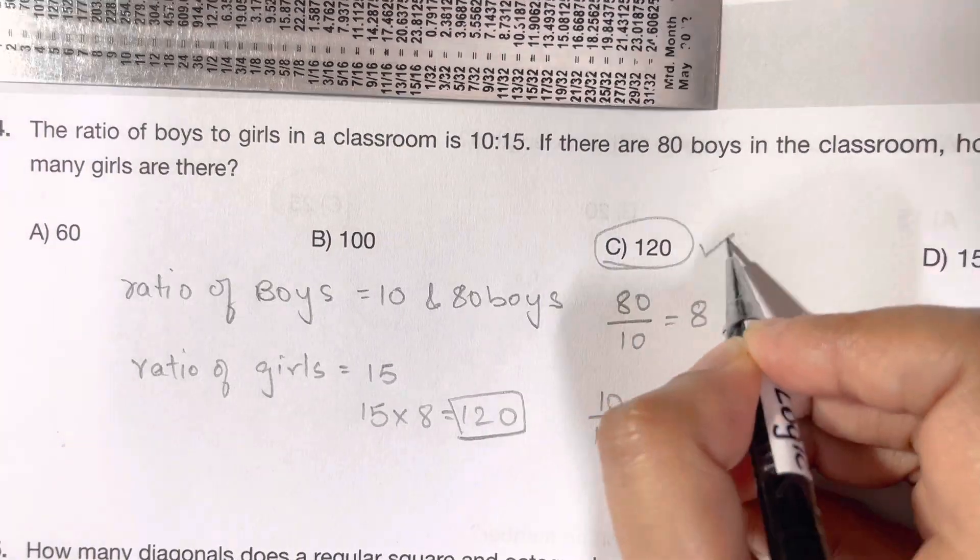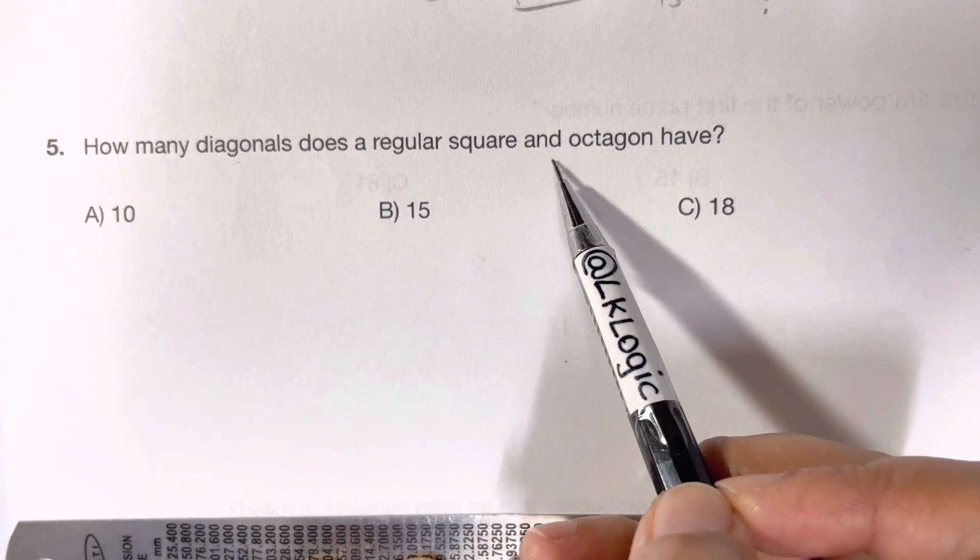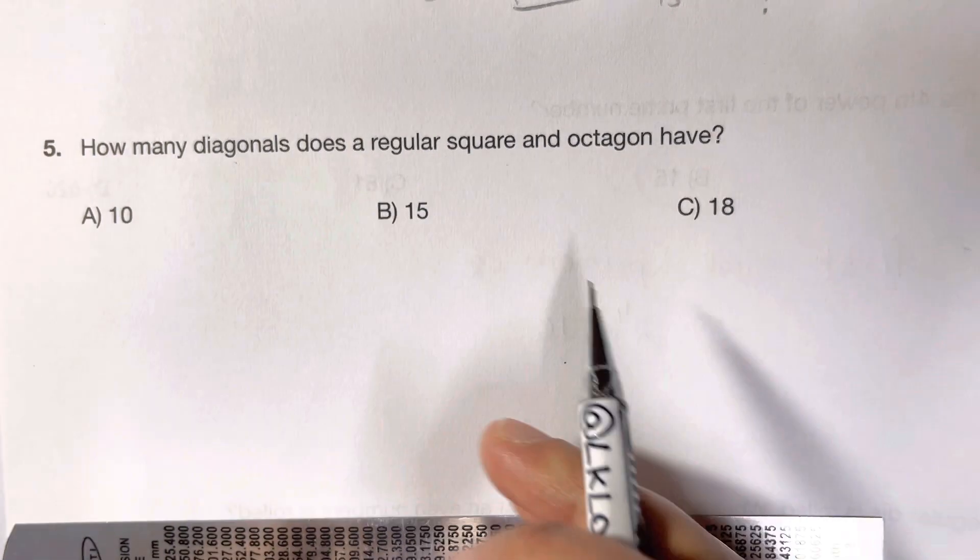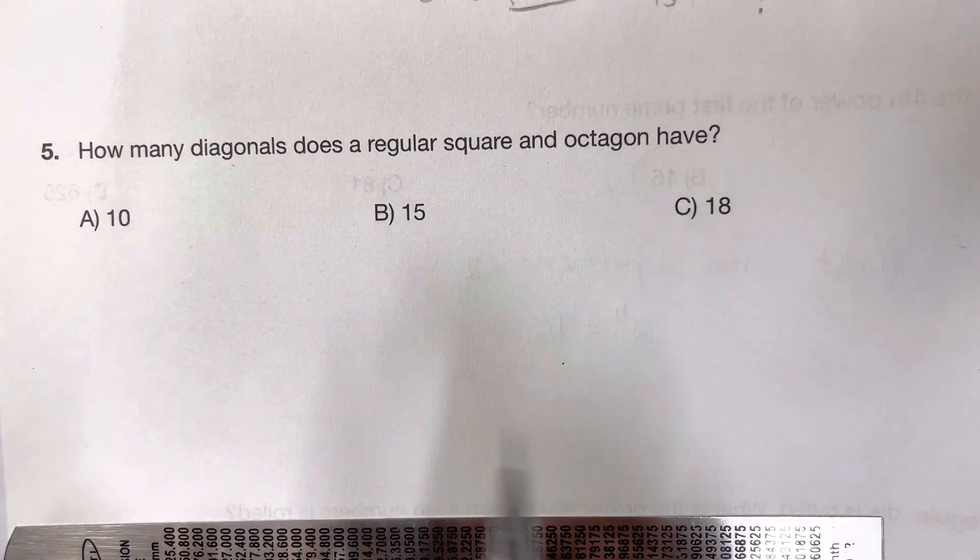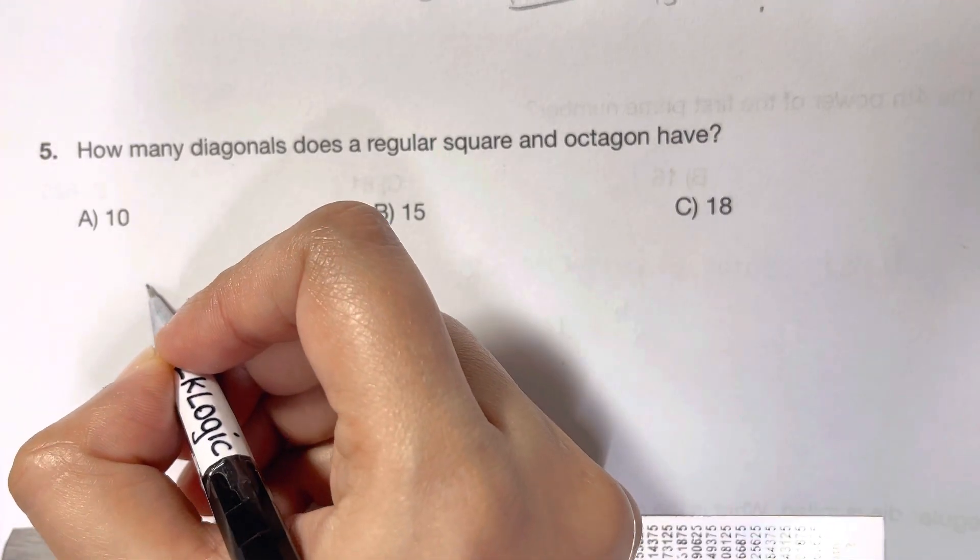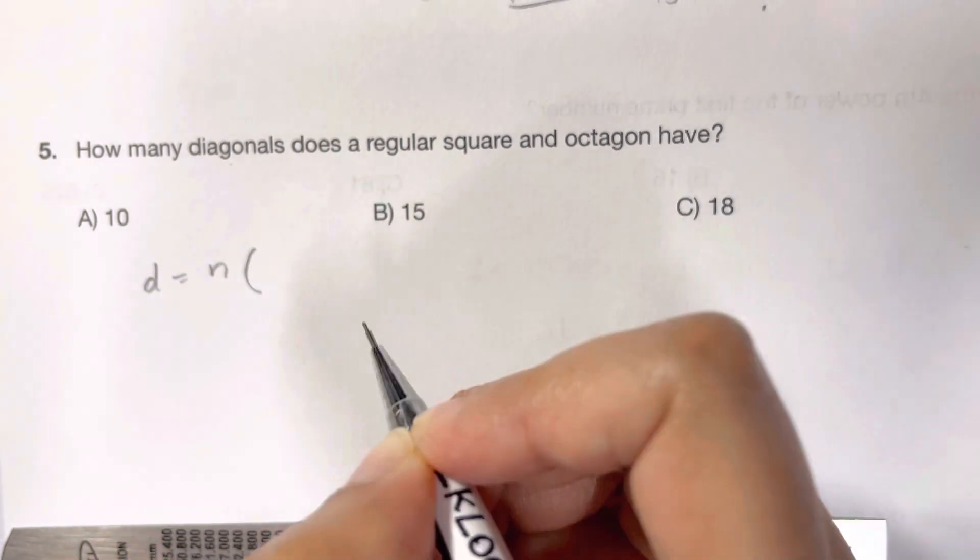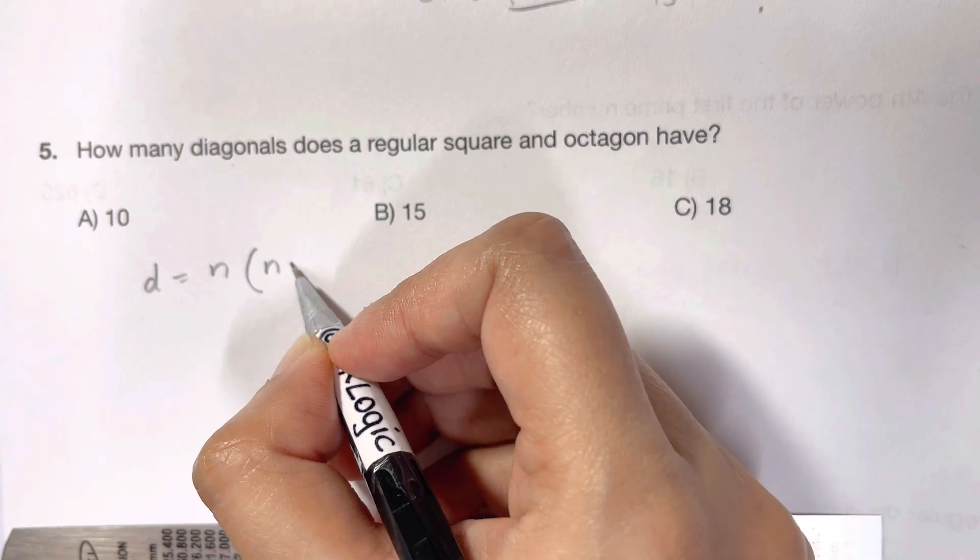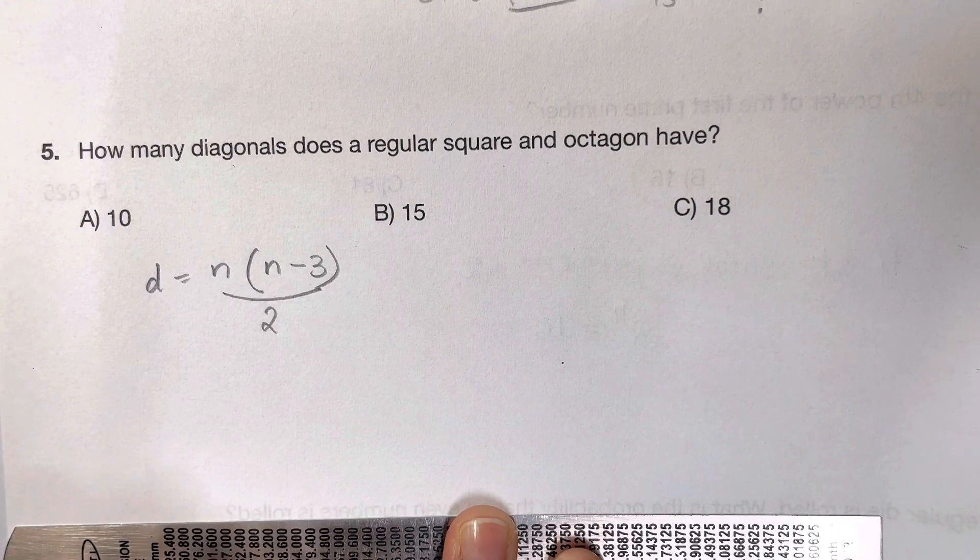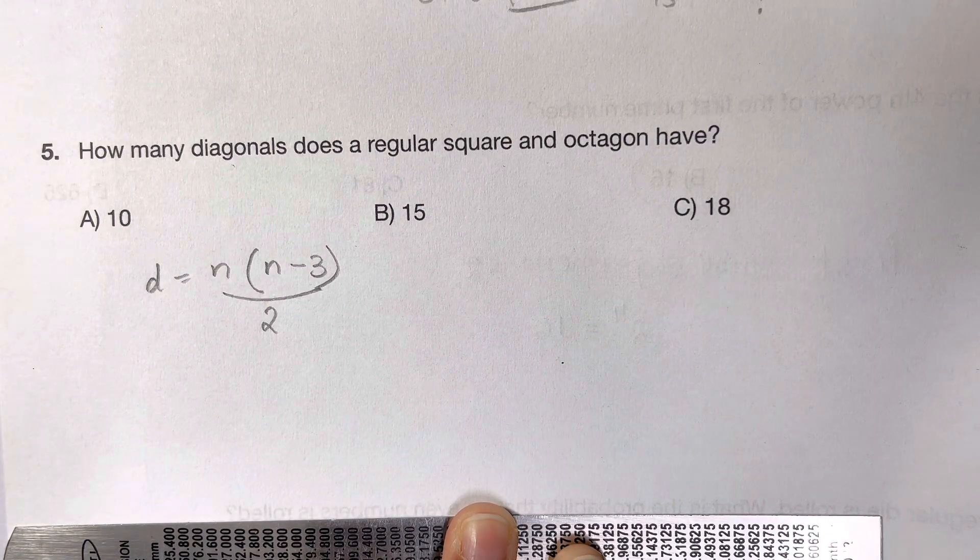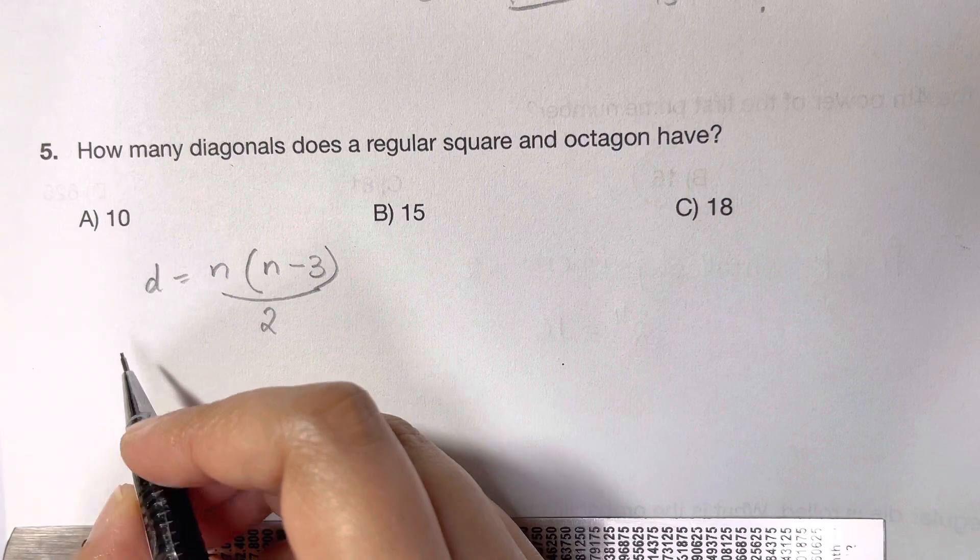Let's see, how many diagonals does a regular square and octagon have? Whenever you want to remember how many diagonals are there, you just have to remember this: number of diagonals is given by number of sides times number of sides minus 3, divided by 2. If you can remember this, you can easily calculate how many diagonals are there.